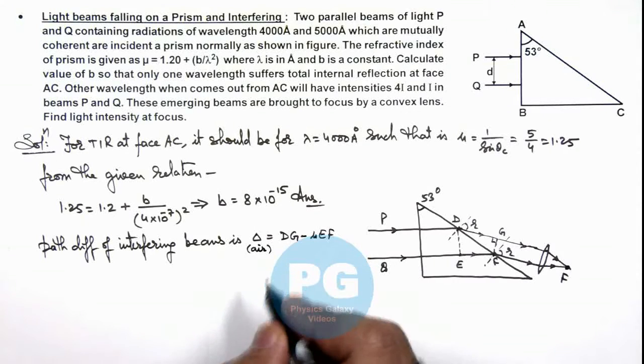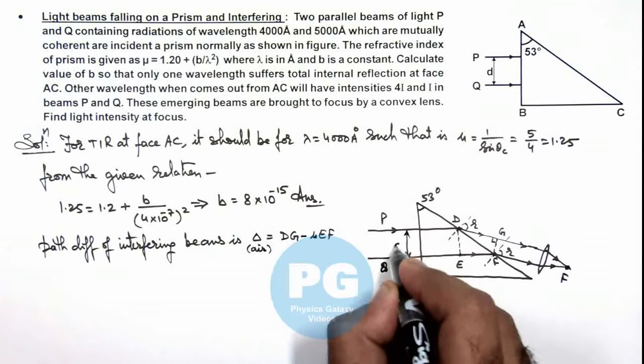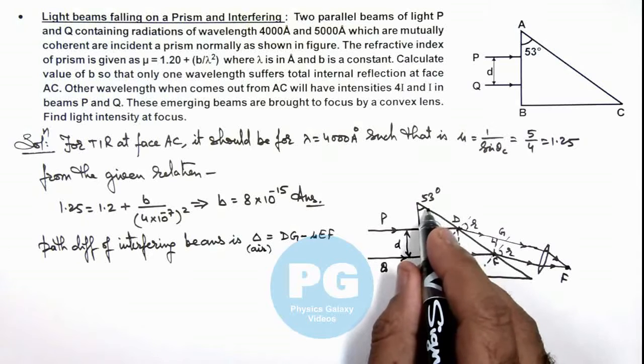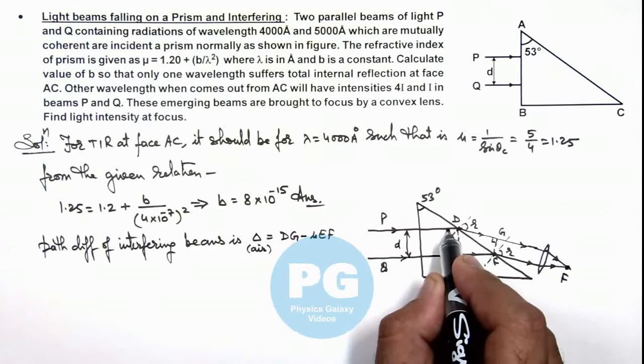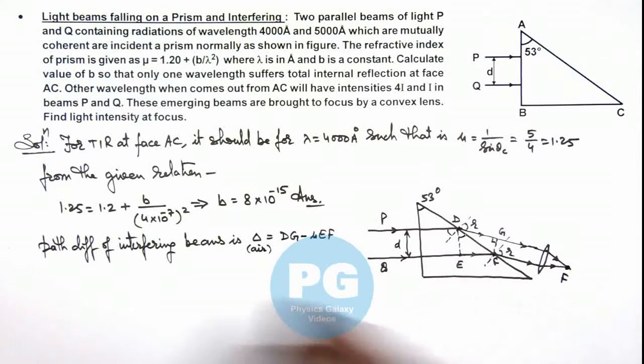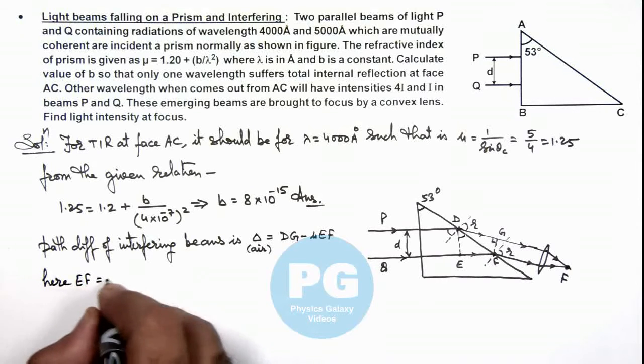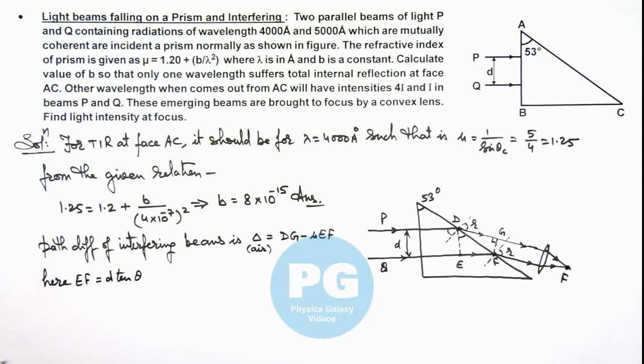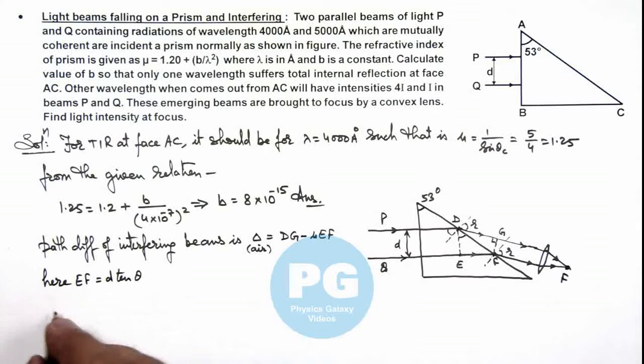Now in this situation here if we calculate the value of EF, we are already given that the separation between the beams is d, between the beams is d. And in this case if this angle is 53 degrees, this angle will also be 53 degrees and this angle is also 53 degrees. So we can write the value of EF is equal to d tan θ. And EF in air will be multiplied with μ. And if we calculate the value of DG, then the value of DG we can write as this will be DF sin r.